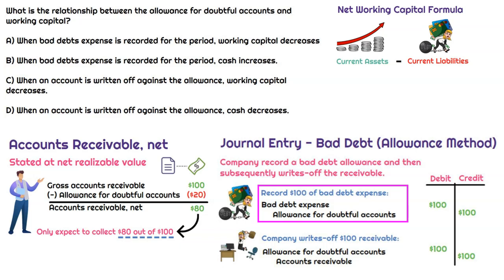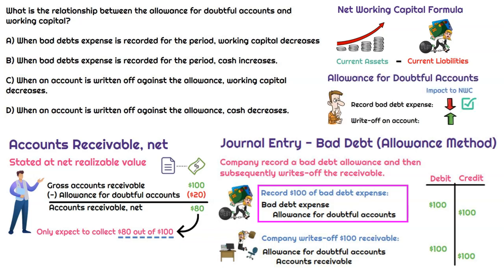When we credit Allowance for Doubtful Accounts, because it's a contra asset, that increases the balance. Since it's bringing down total current assets, if we increase that balance, it's becoming more negative, so it's going to drive down overall current assets. And if current assets go down, so does working capital. So the correct answer is: when we record bad debt expense, the impact to net working capital decreases it — it drives it down because overall current assets are getting smaller, and there's no impact to current liabilities.